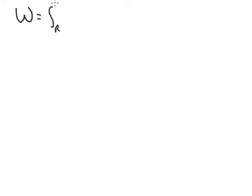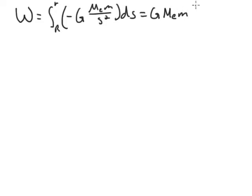So the limits going from big R to little r of F of S, which is minus G Me m over S squared dS. We can pull out G and the M's because they're constants, and we'll leave the minus sign in there. So we're integrating from big R, the radius of the Earth, out to wherever this rocket makes it, and then we have minus 1 over S squared dS.